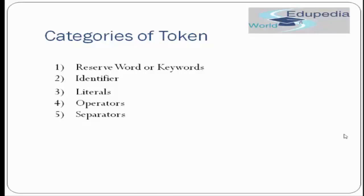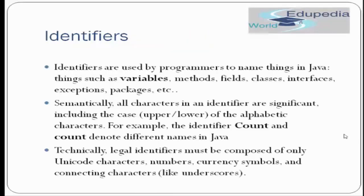Now let's move ahead with the first category of Java token: Java identifiers. Identifiers are used by programmers to name things in Java — things such as variables, methods, fields, classes, interfaces, exceptions, packages, etc. Anything that is user-defined in your Java program needs to be given a particular name, and that name is called an identifier.